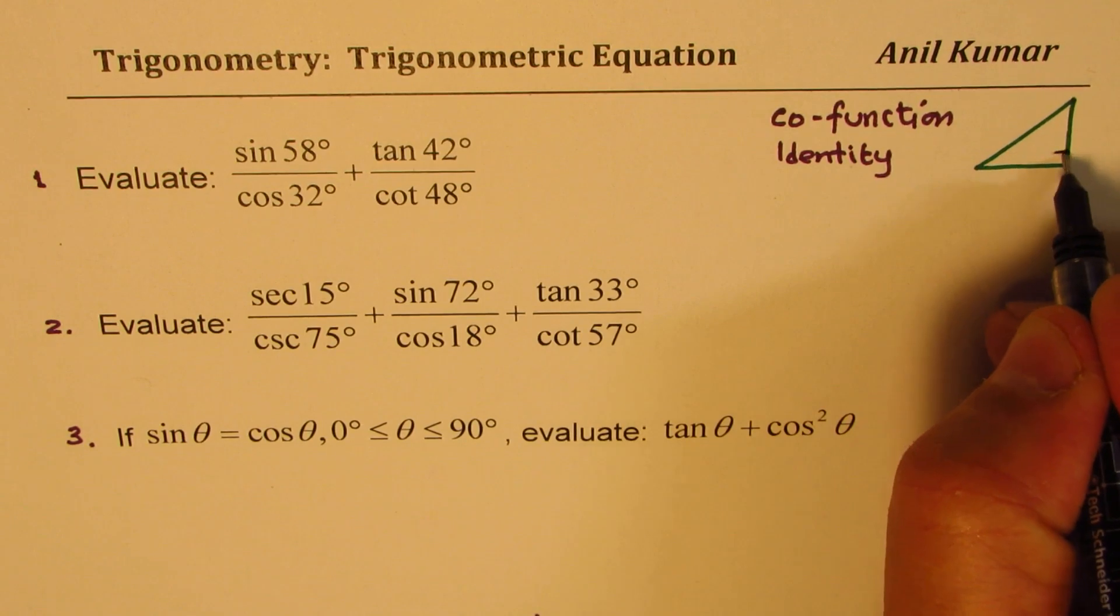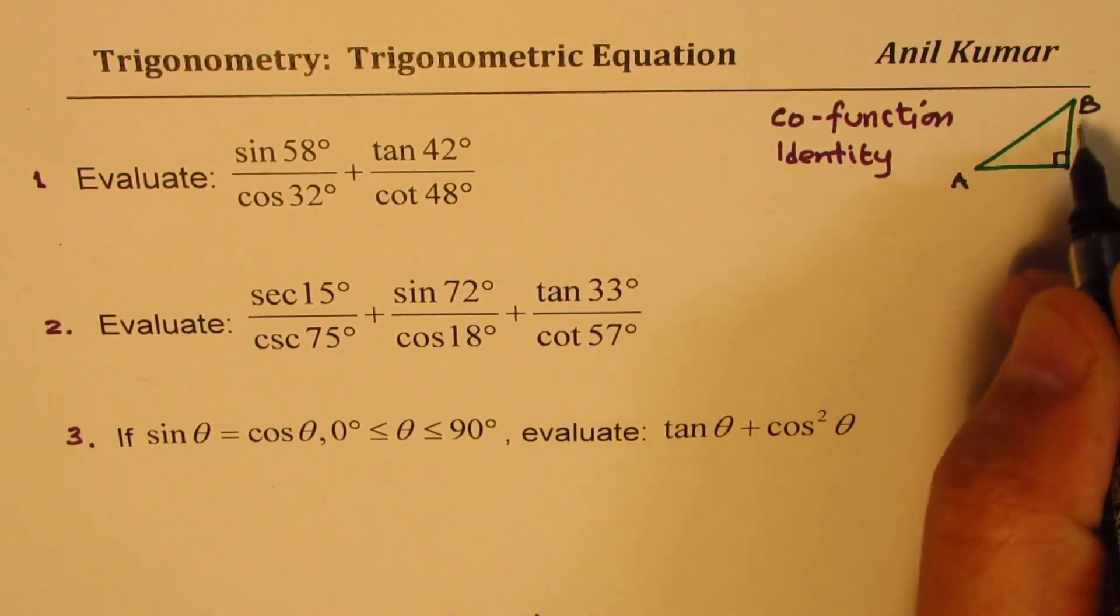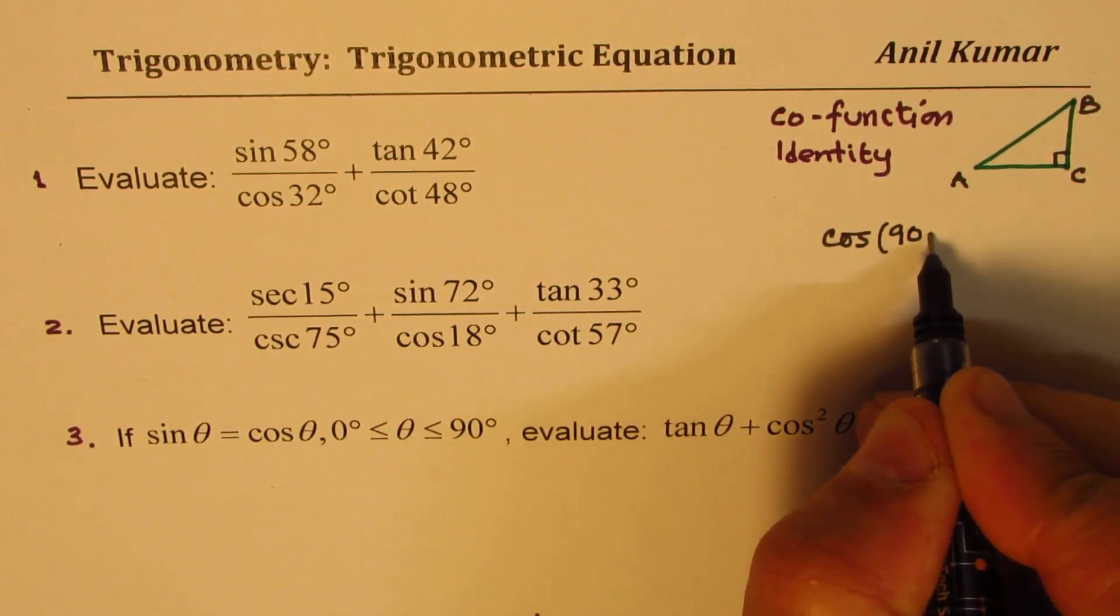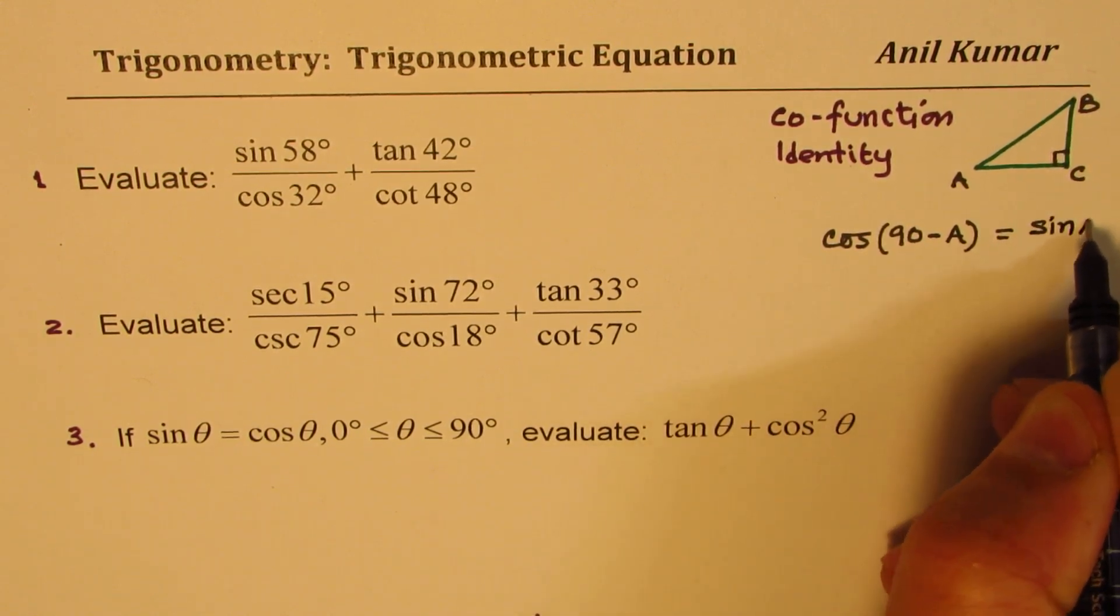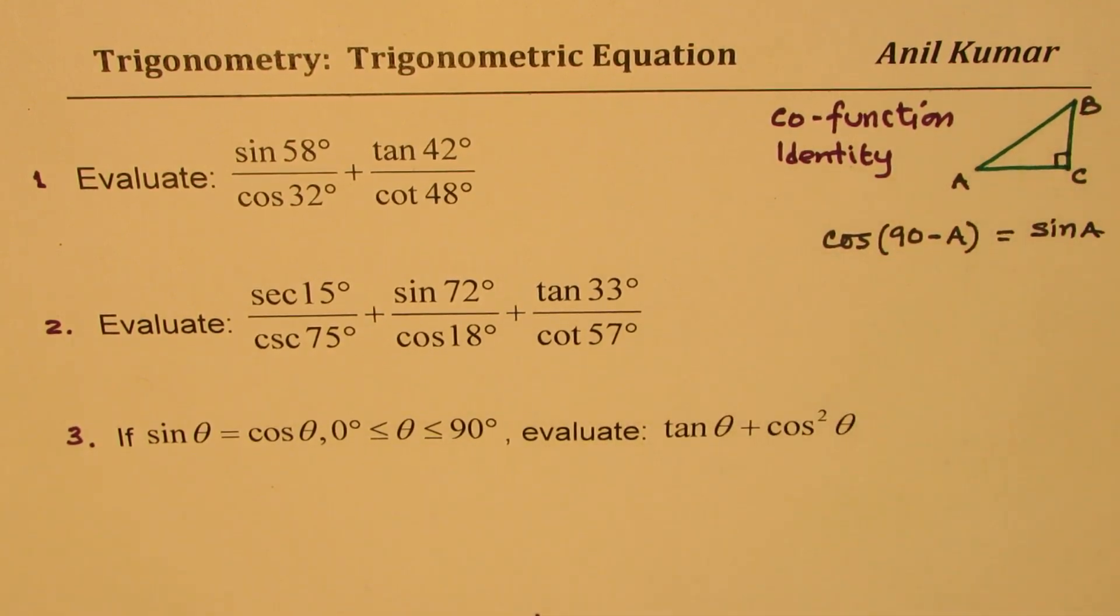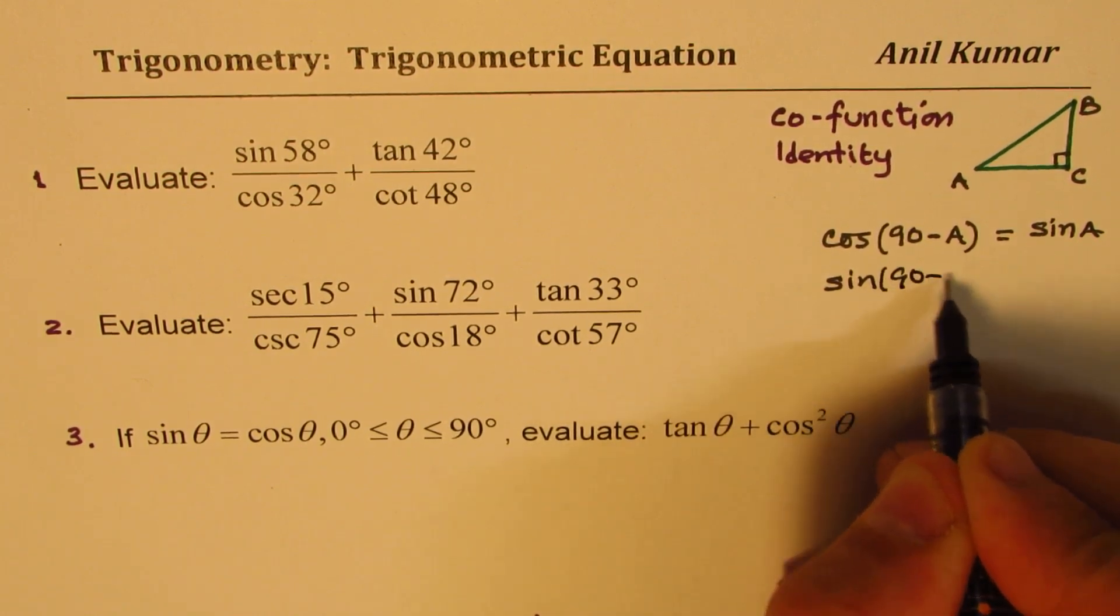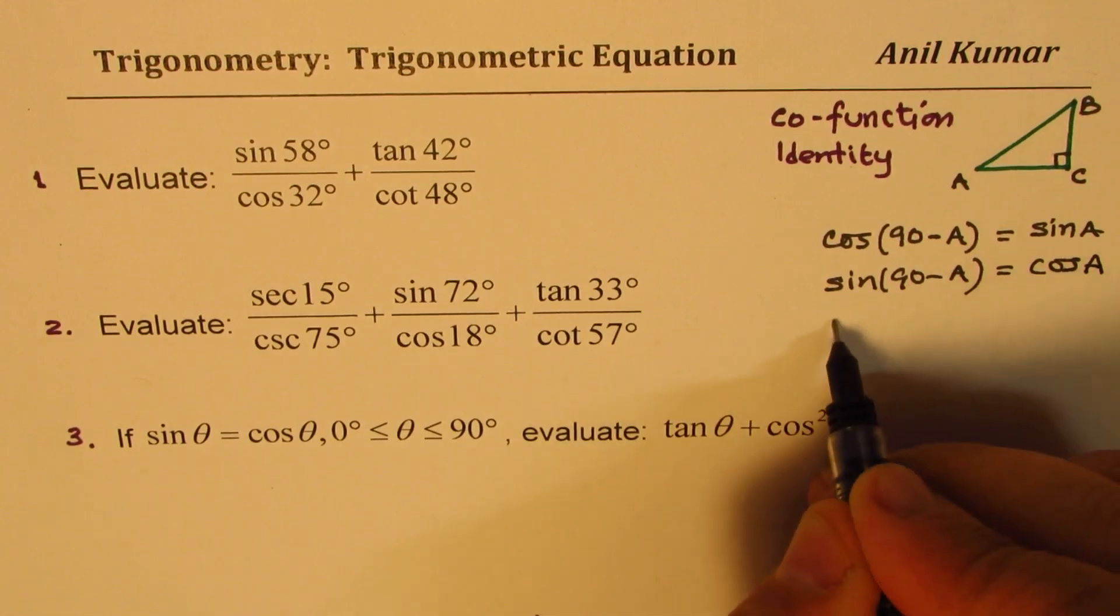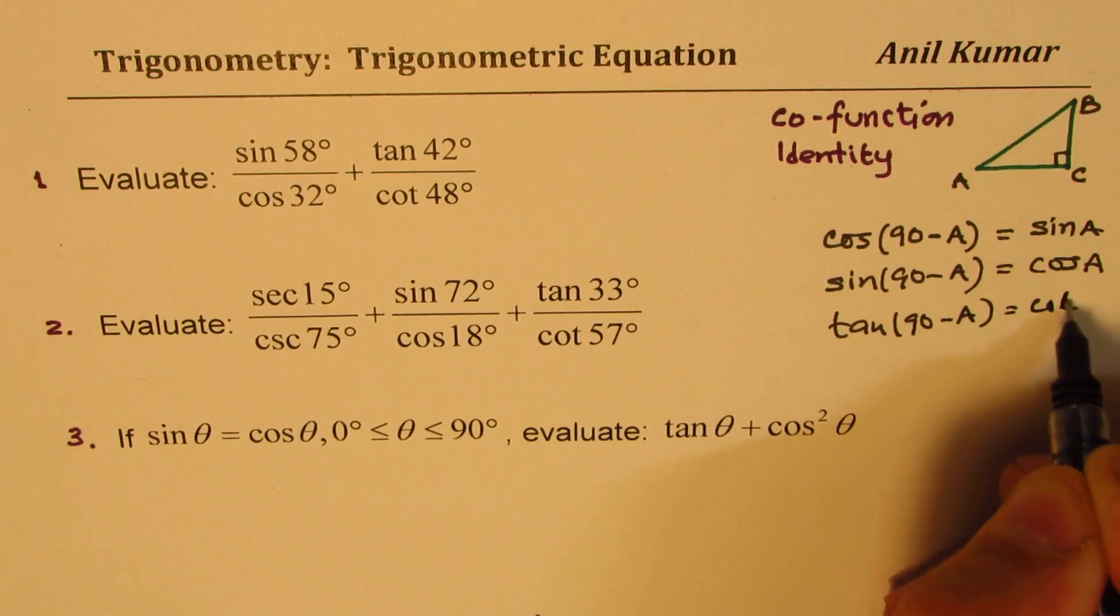So if you have a right triangle ABC, in that case, cos of 90 minus A is equal to sine A. So these are co-functions in any triangle where sum of A and B is 90 degrees. So sine of 90 minus A will be equal to cos A. Tan of 90 minus A will be equals to cot A.